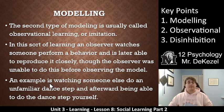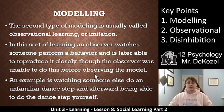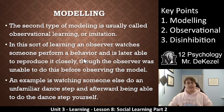In this sort of learning, an observer watches someone perform a behavior and then later is able to reproduce it closely, although the observer was unable to do this before observing the model. An example is watching someone else do an unfamiliar dance step and afterward being able to do it yourself. You watch it closely and then you imitate it — and unlike the last type, you've actually learned something.